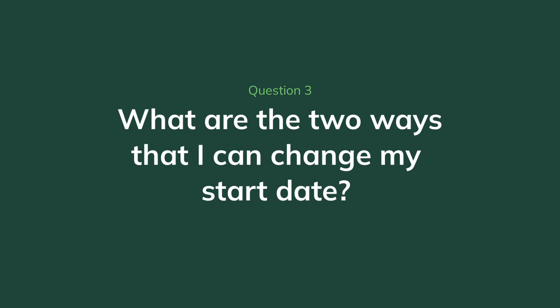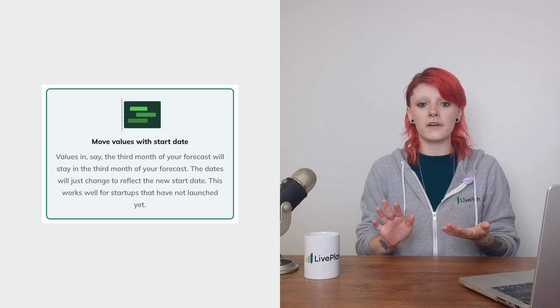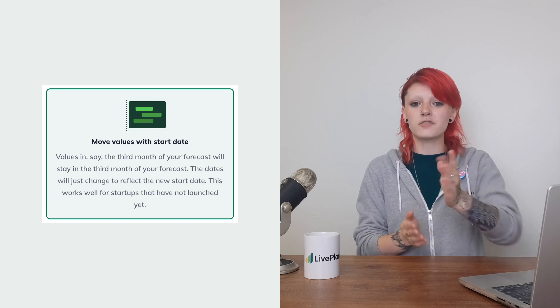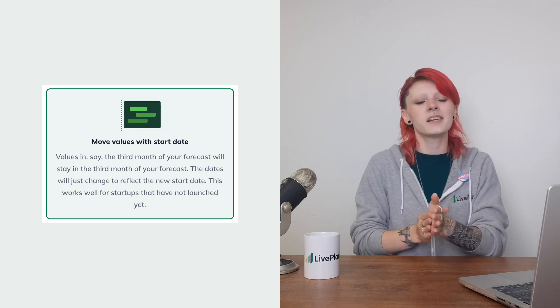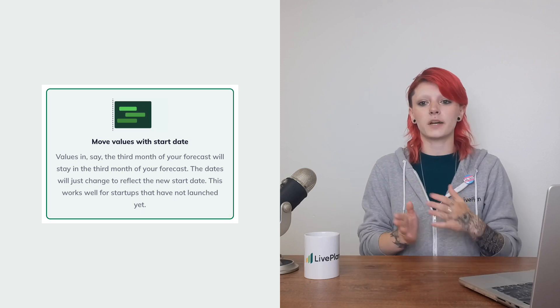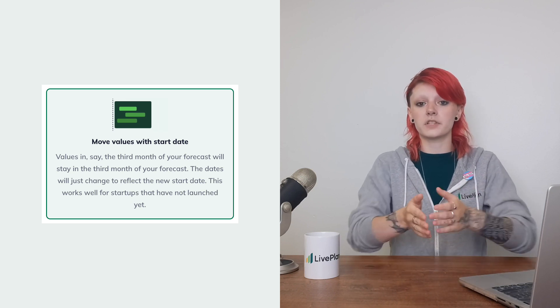So what are the two methods for changing my start date in LivePlan? We have a new feature in the options menu. When you're in the options menu and you're going to change your forecast starting date, you'll see that there are two methods for changing the starting date. You can either select to move the values with the starting date. This means that if your forecast starting date is January 2024 and you have data entered in January 2024, then you need to bump the forecast starting date to January 2025 — moving the values with the start date will just keep that data in the same spot and just change the year that it's in.